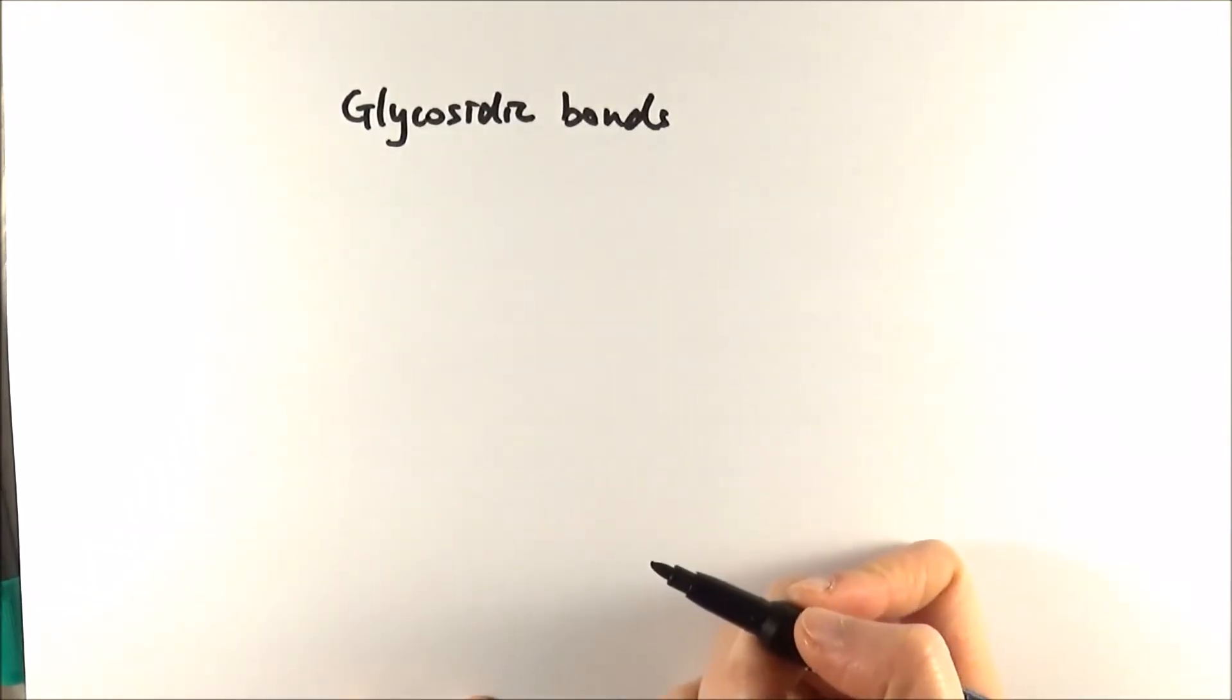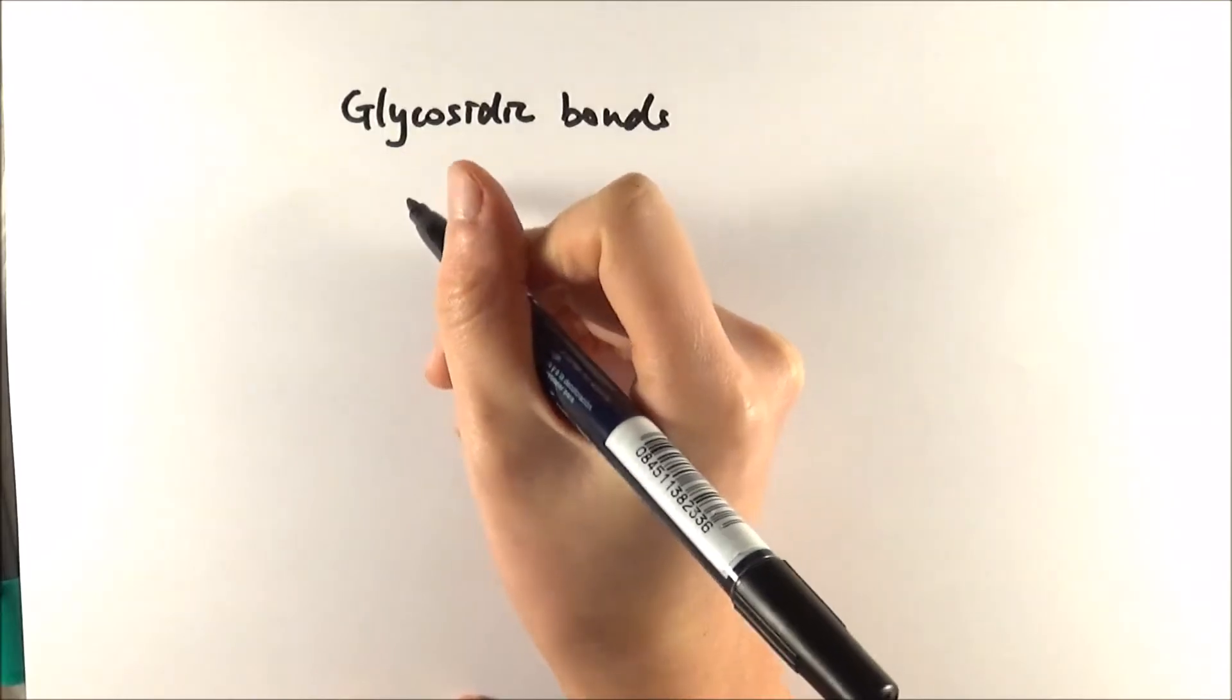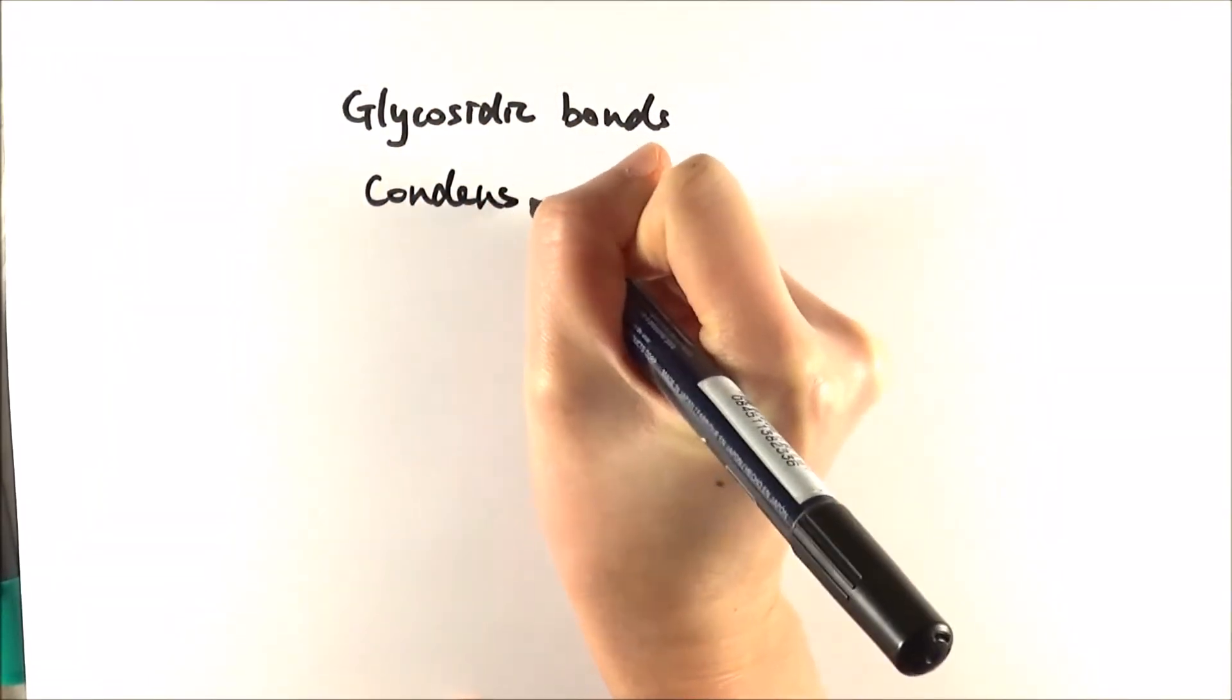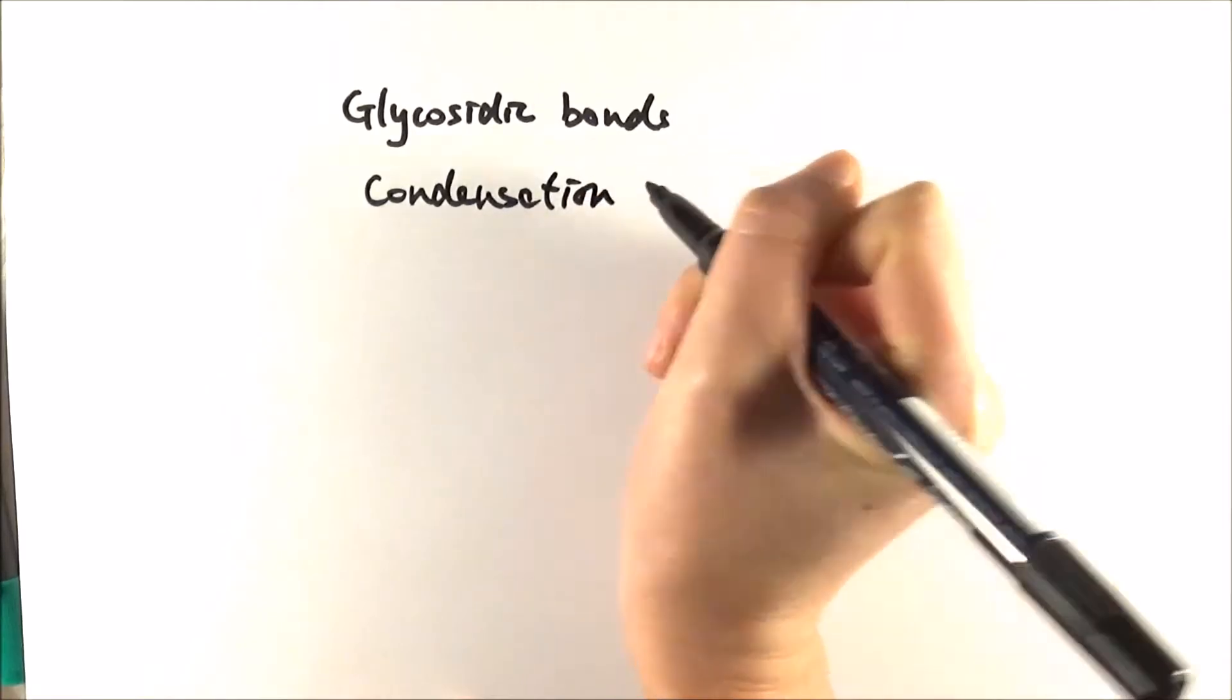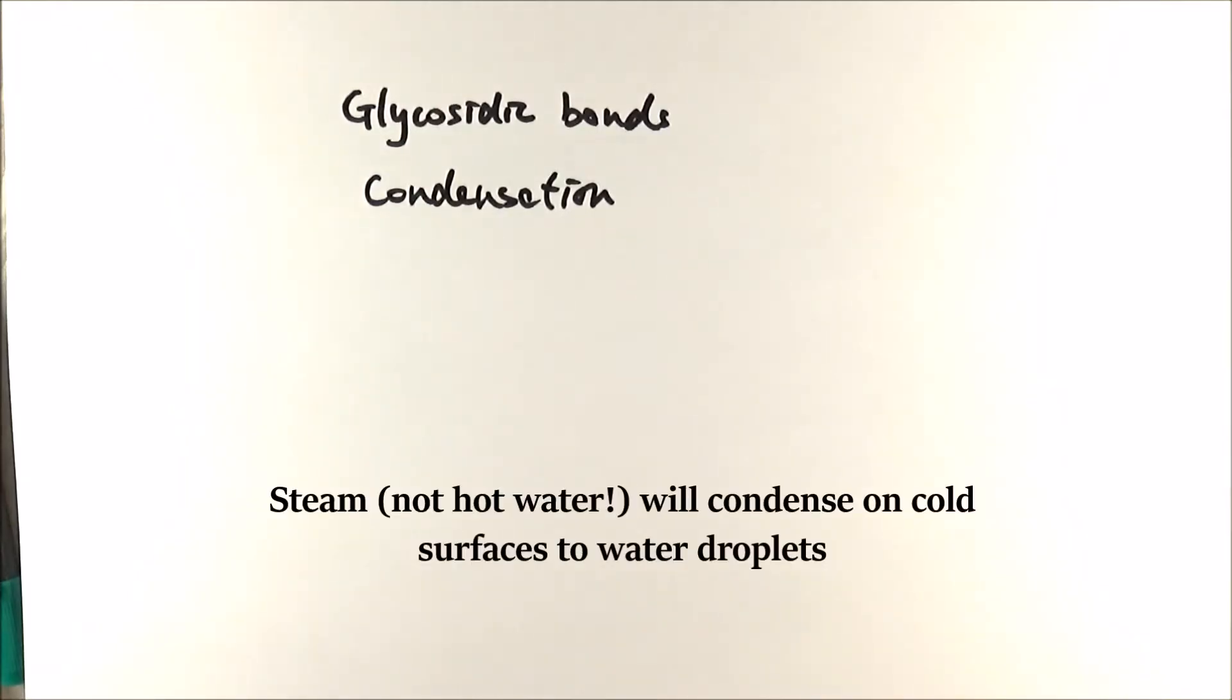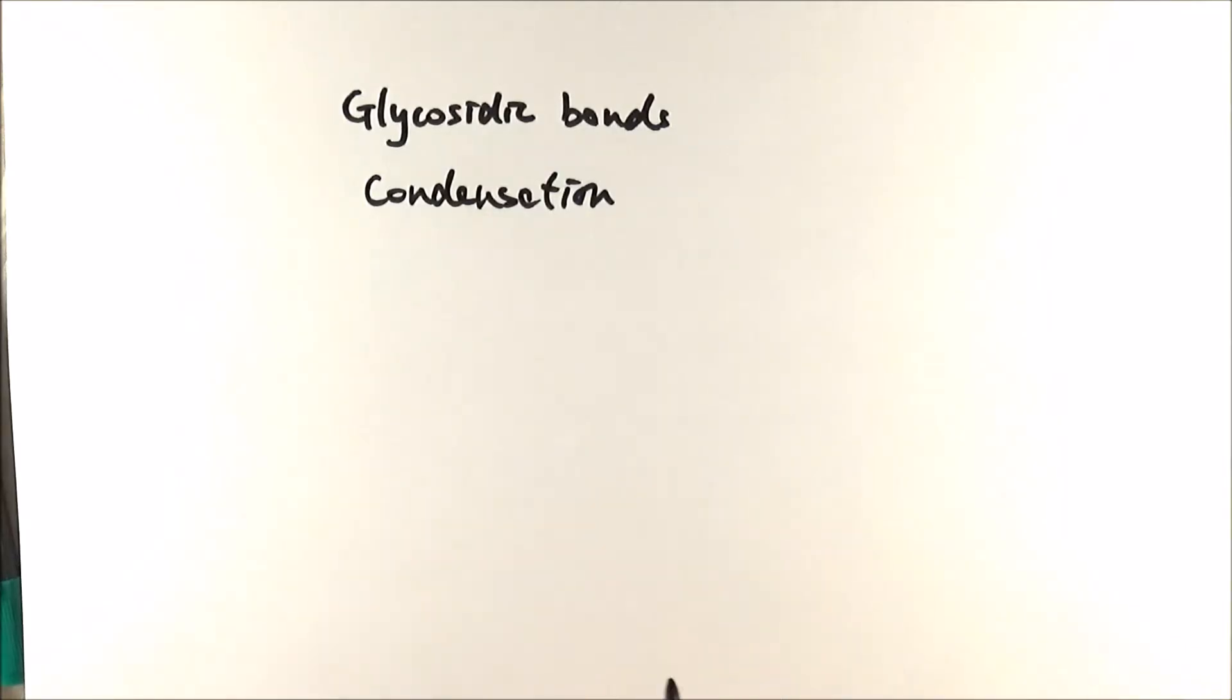Now the way that they form these bonds are through reactions called condensations and as the name implies, it's the same as if you take a shower and you've used hot water, the hot water will condense on the mirror surface and becomes water droplets, and in a condensation reaction a water molecule is formed in each of these reactions.